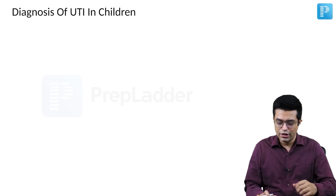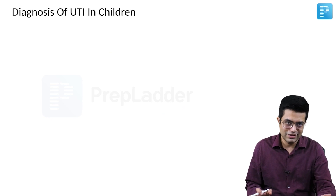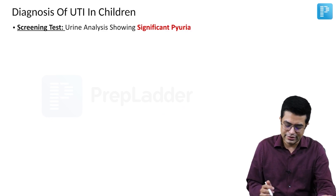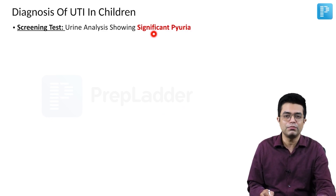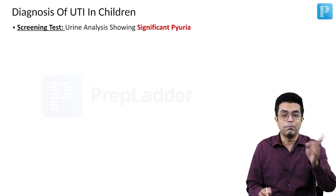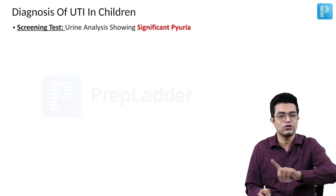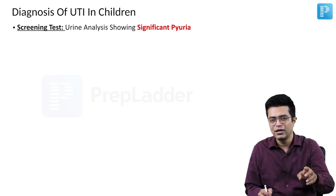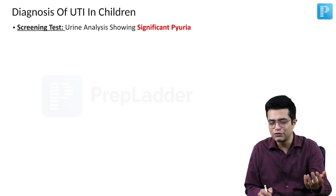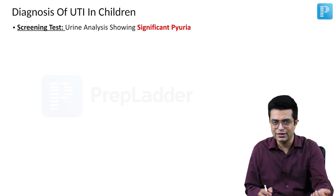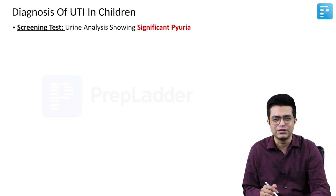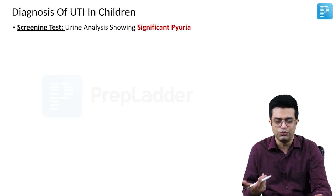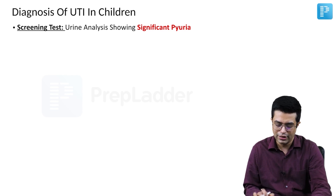Diagnosis of UTI in children. First of all, the screening test is urine analysis, which will show the presence of significant pyuria. By itself, significant pyuria is not diagnostic, but it gives clues — it is a screening test. It has about 70 to 80 percent sensitivity in indicating that UTI is probably present.